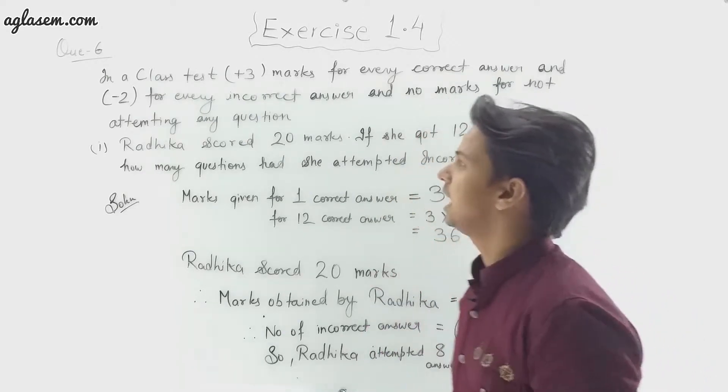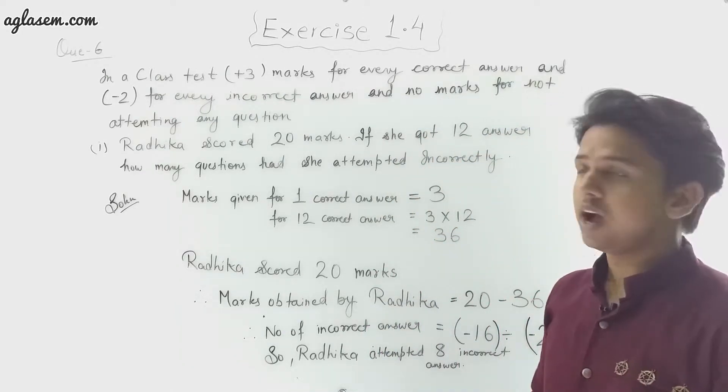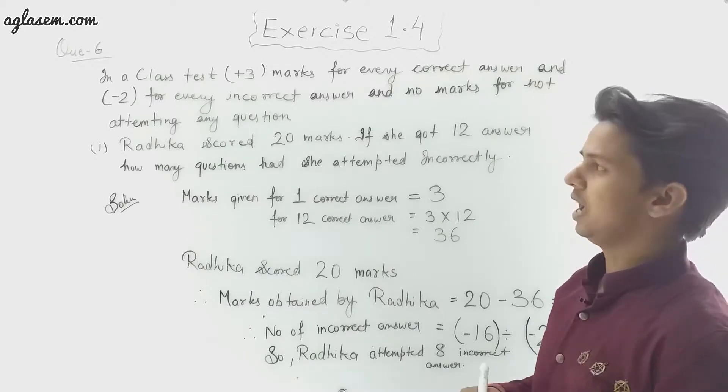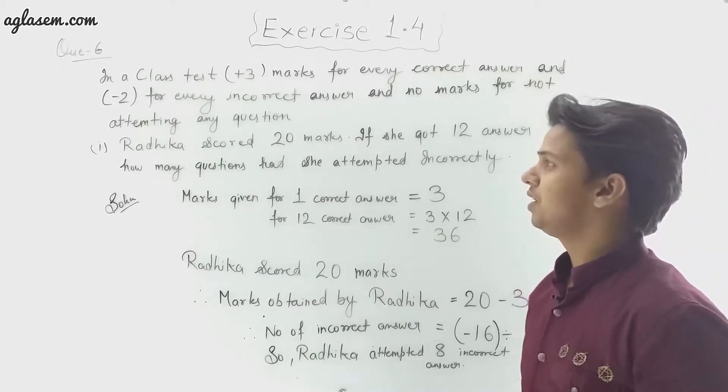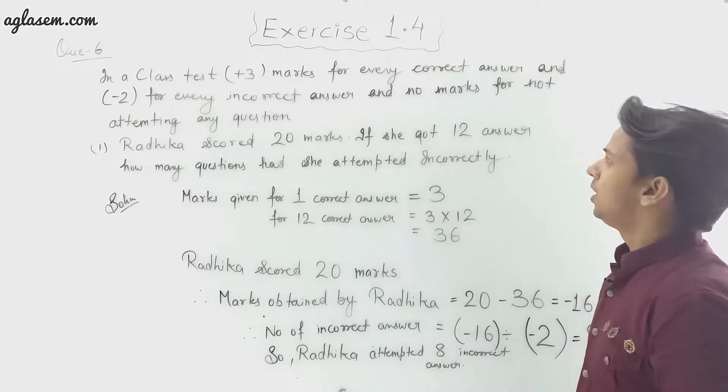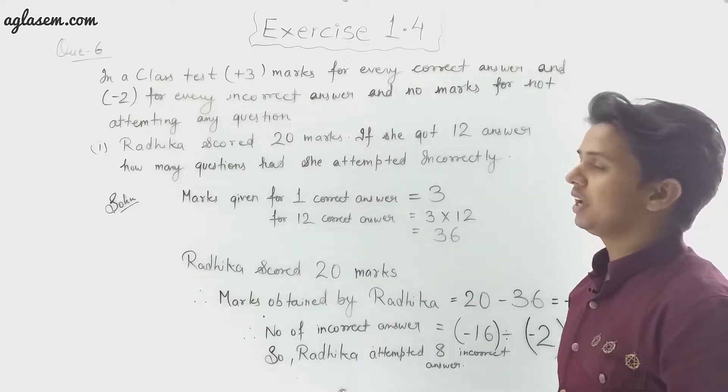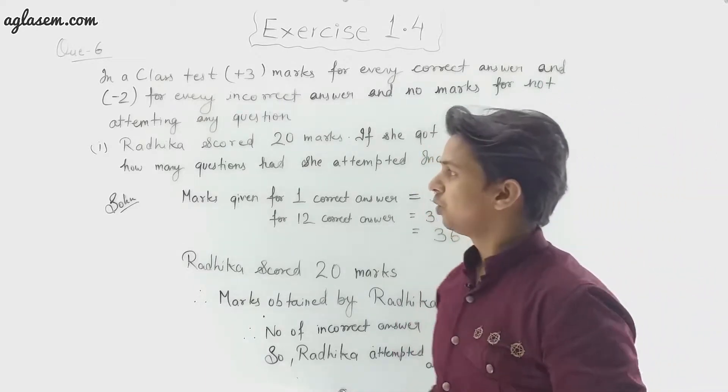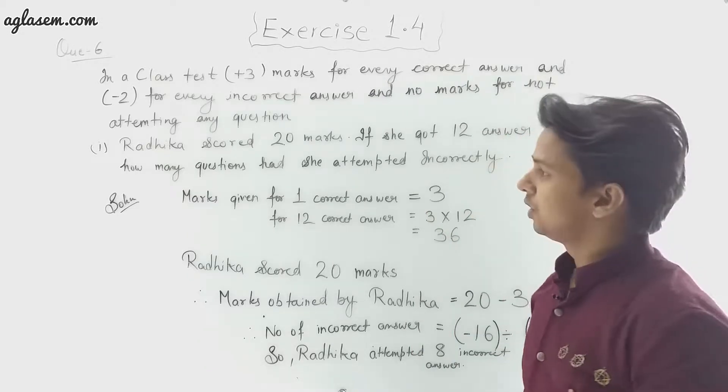Question number 6 says: In a class test, +3 marks for every correct answer and -2 for every incorrect answer, and no marks for not attempting any question. There are two parts. The first part says Radhika scored 20 marks. If she got 12 correct answers, how many questions had she attempted incorrectly?